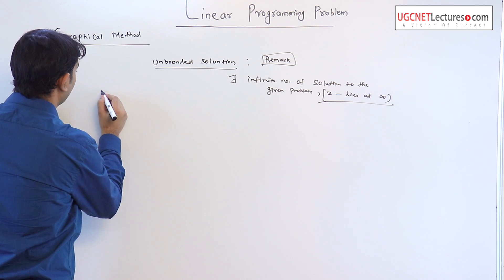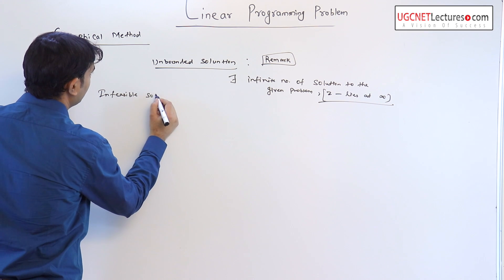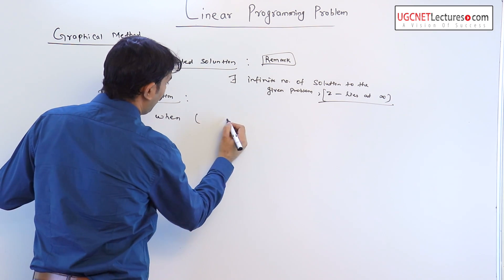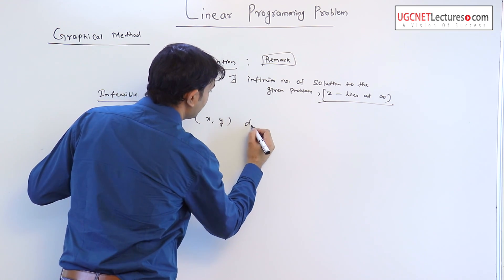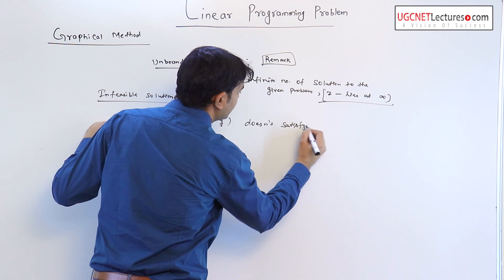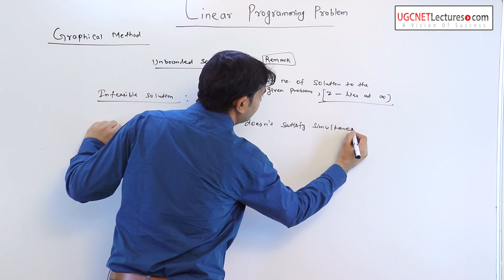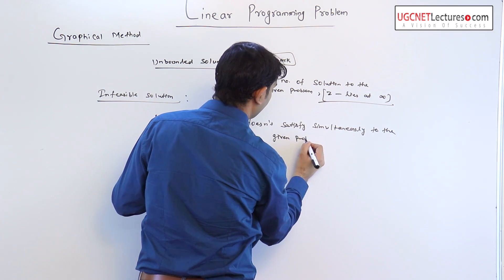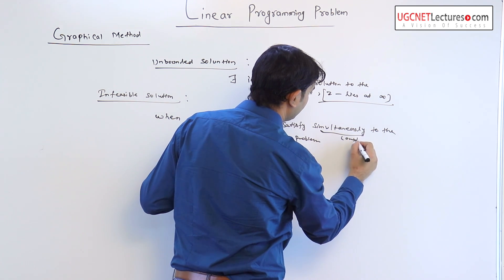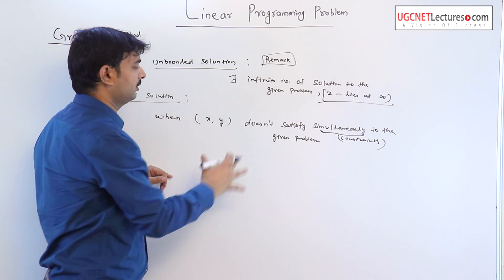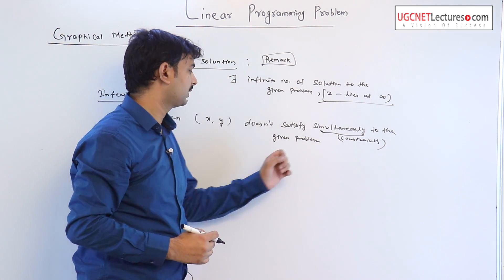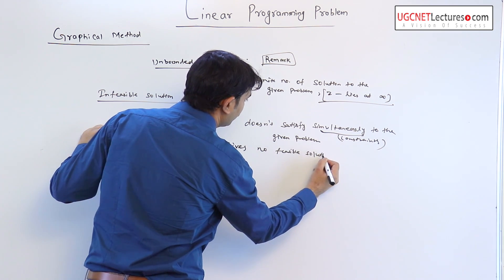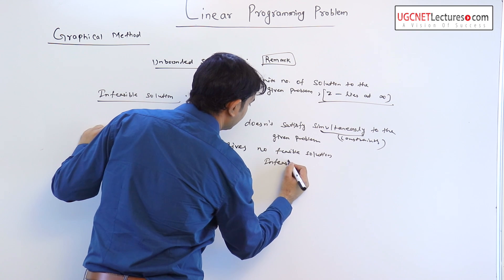The second solution type is the infeasible solution. An infeasible solution occurs when the coordinates x, y do not simultaneously satisfy all the given constraints. Such a type of problem gives no feasible solution — or you can say it gives an infeasible solution.